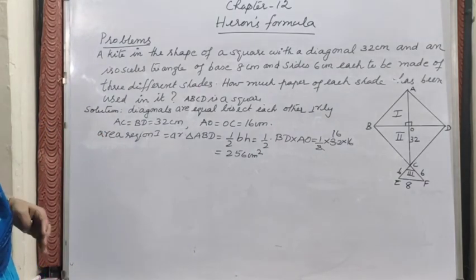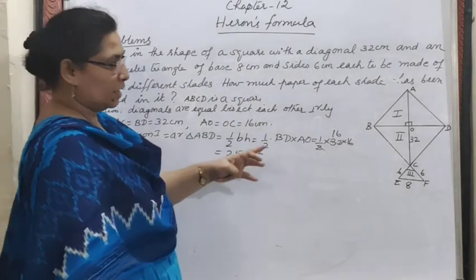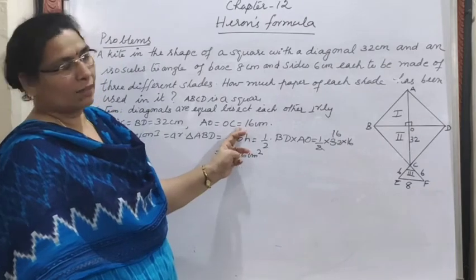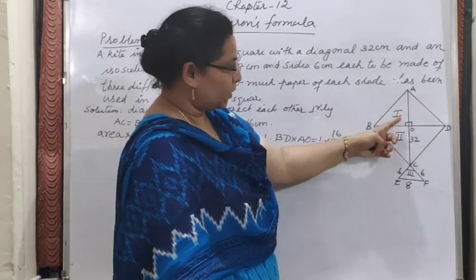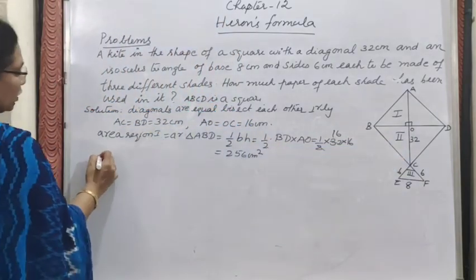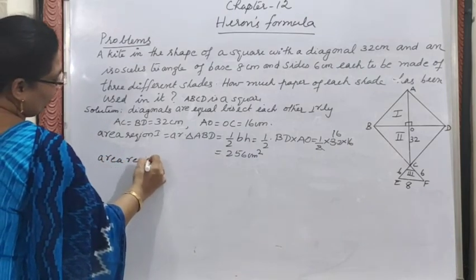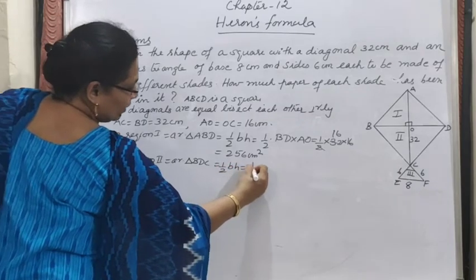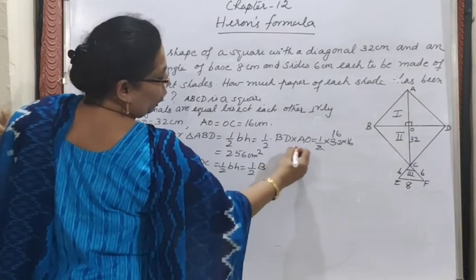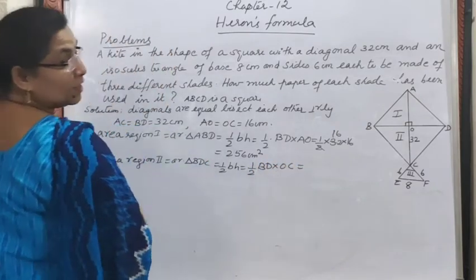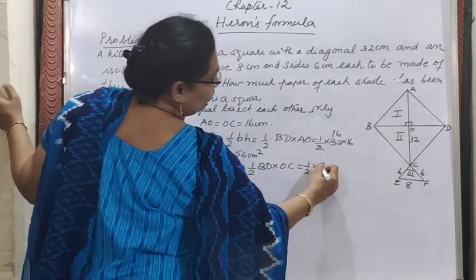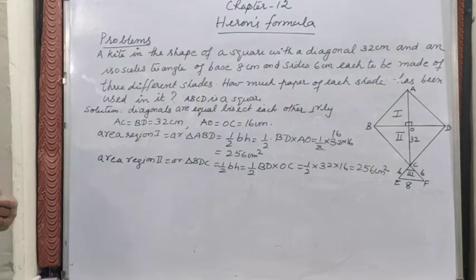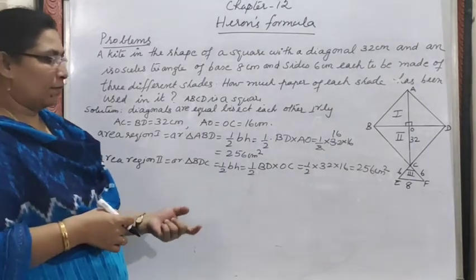Area of Region 2 = area of triangle BDC. Since AC = BD = 32 cm and OC = 16 cm, using the same formula: ½ × BD × OC = ½ × 32 × 16 = 256 cm². Both triangles give the same area of 256 cm².